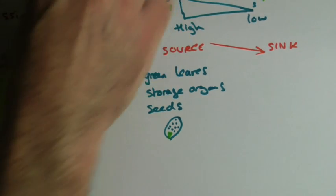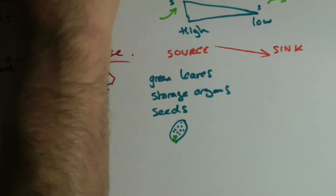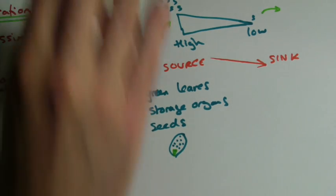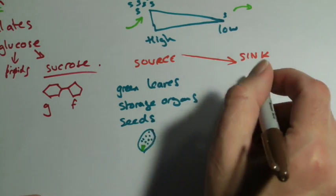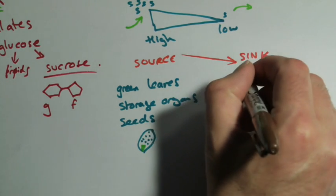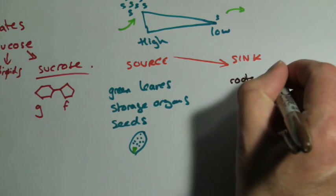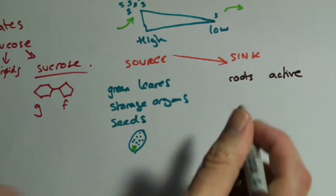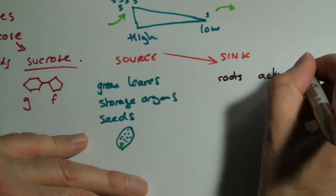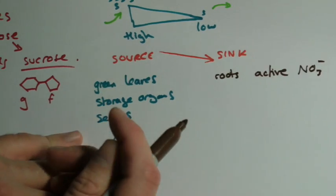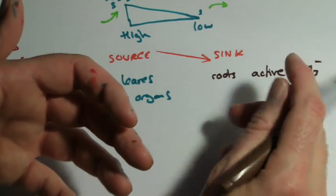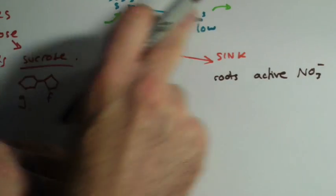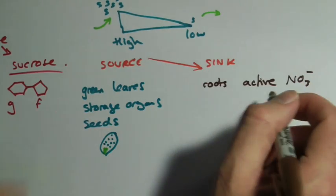The sinks - I should have a different colour so this stands out. The sinks are anywhere they're going to use up or take out or remove the sucrose. So the roots, because they're particularly active, pumping in nitrate ions. Lots of mitochondria kicking around in there, which would be using up the glucose that came from the sucrose. We're basically removing it by getting rid of it.